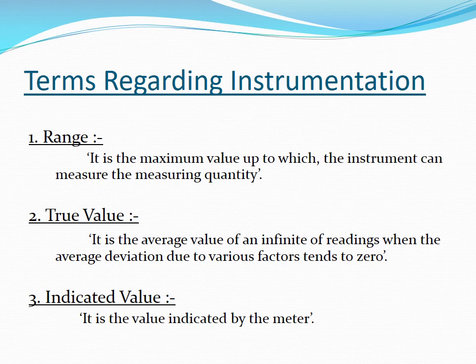The third term is indicated value. It is the value indicated by the meter — simply what you can see on the scale or display of the meter. The true value is the average value of all the readings, whereas the indicated value is what the pointer or scale shows at a given moment.